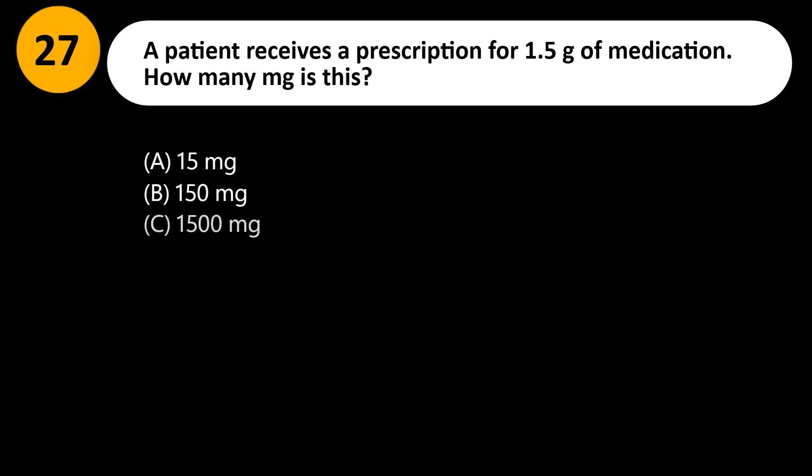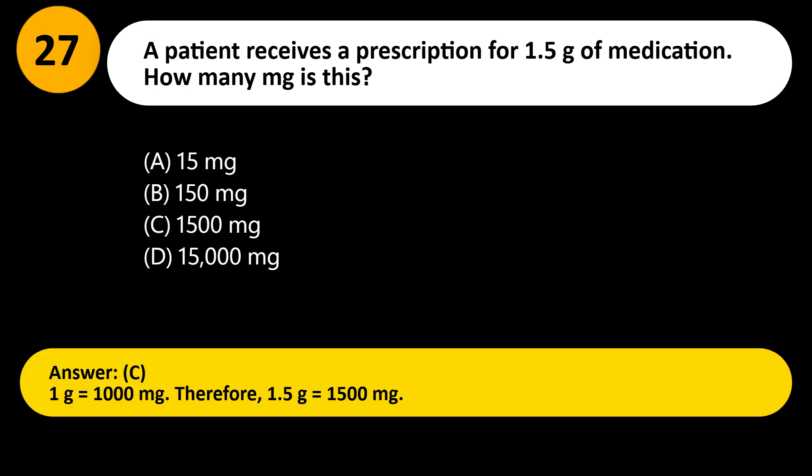A patient receives a prescription for 1.5 g of medication. How many mg is this? A) 15 mg, B) 150 mg, C) 1500 mg, D) 15,000 mg. Answer: C. 1 g equals 1000 mg; therefore 1.5 g equals 1500 mg.